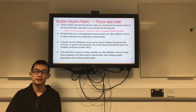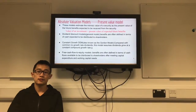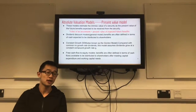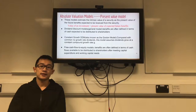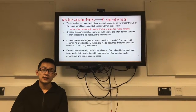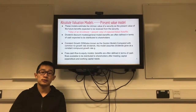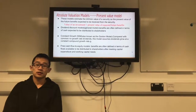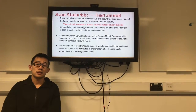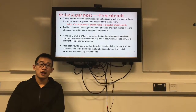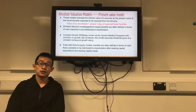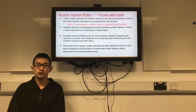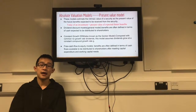Now I'm going to analyse the present value model. This model estimates the intrinsic value of a security as the present value of future benefits expected to be received from the security. The first model is the dividend discount model, general model, where benefits are defined in terms of cash expected to be distributed to shareholders. The constant growth DDM assumes that dividends grow at a constant compound growth rate G. The third is the free cash flow to equity model, where benefits are defined in terms of cash flow available to be distributed to shareholders after meeting capital expenditures and working capital needs.